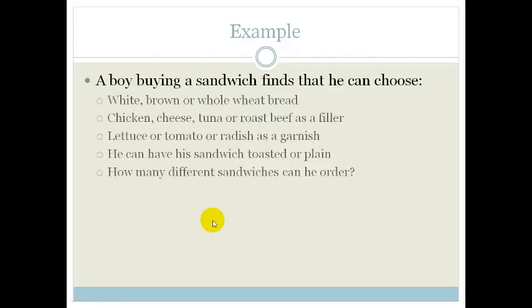So let's look at an example. A boy is buying a sandwich and he finds that he can choose white, brown or whole wheat bread. So how many options does he have there? He's got three options. Here he can choose chicken, cheese, tuna or roast beef. So he can choose four options. Here he can choose lettuce, tomato or radish. So that's three options. He can have a sandwich toasted or plain. So that's two options. So it says how many different sandwiches can he order? Well, he can order 3 times 4 times 3 times 2.